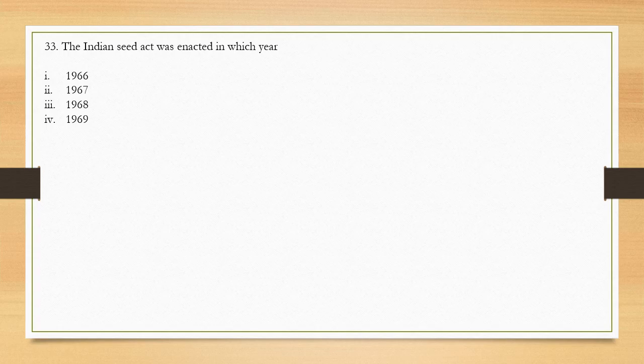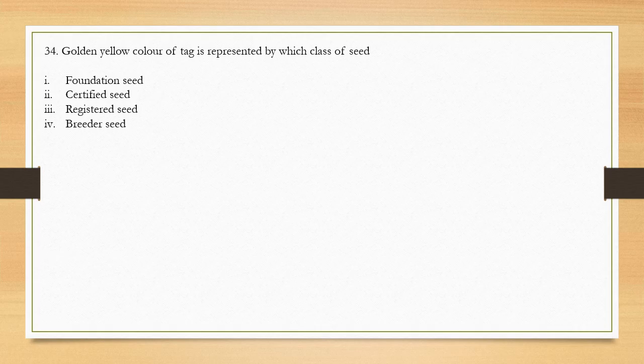Question number 33: The Indian Seed Act was enacted in which year? Options are 1966, 1967, 1968, and 1969. The correct answer is option 1 — the Indian Seed Act was enacted in 1966.